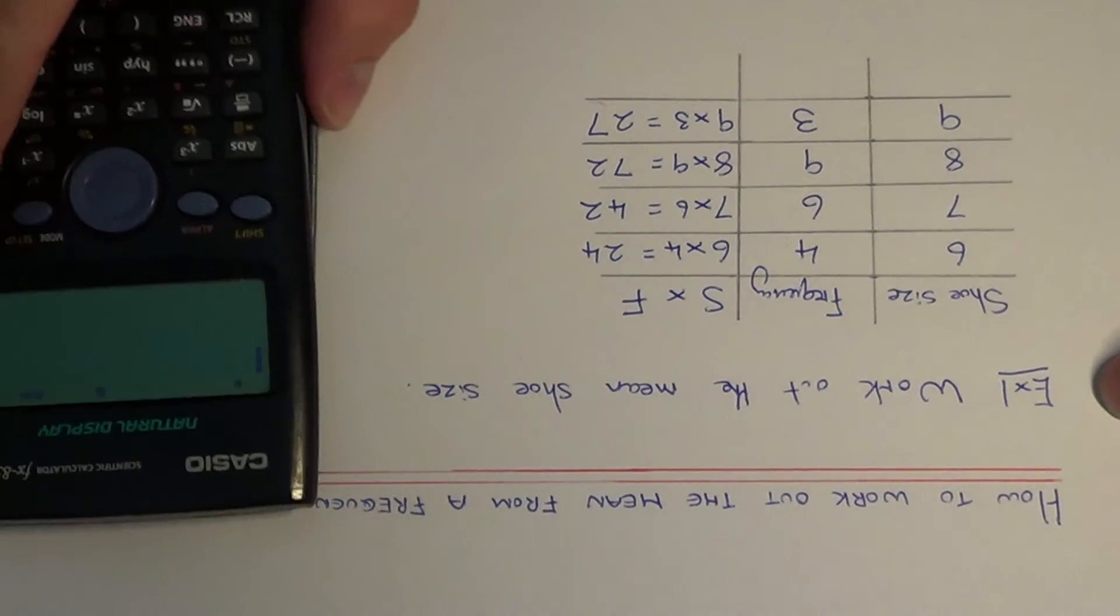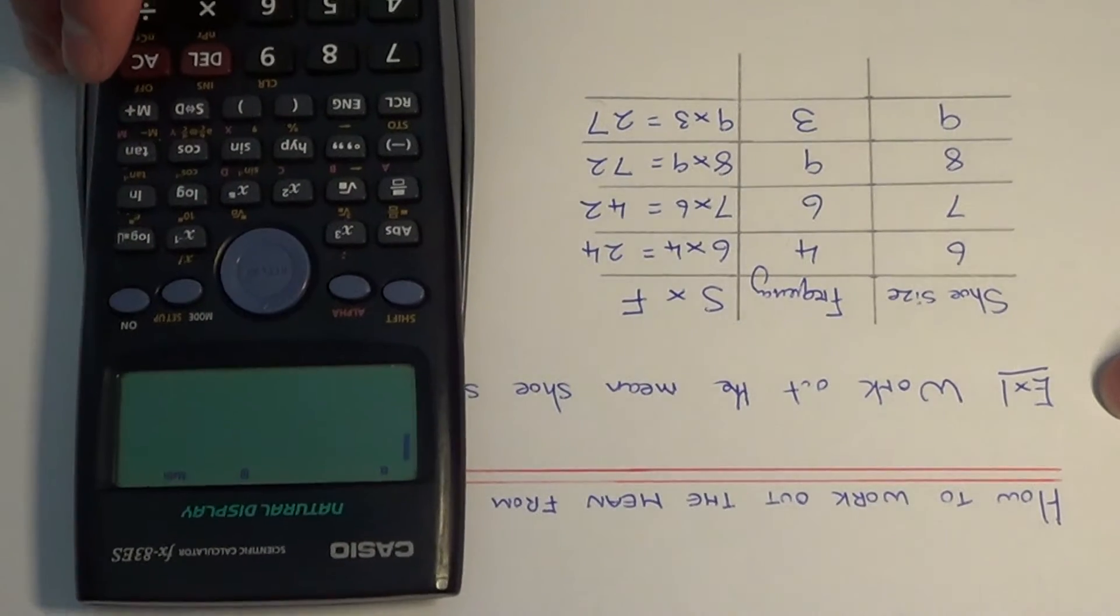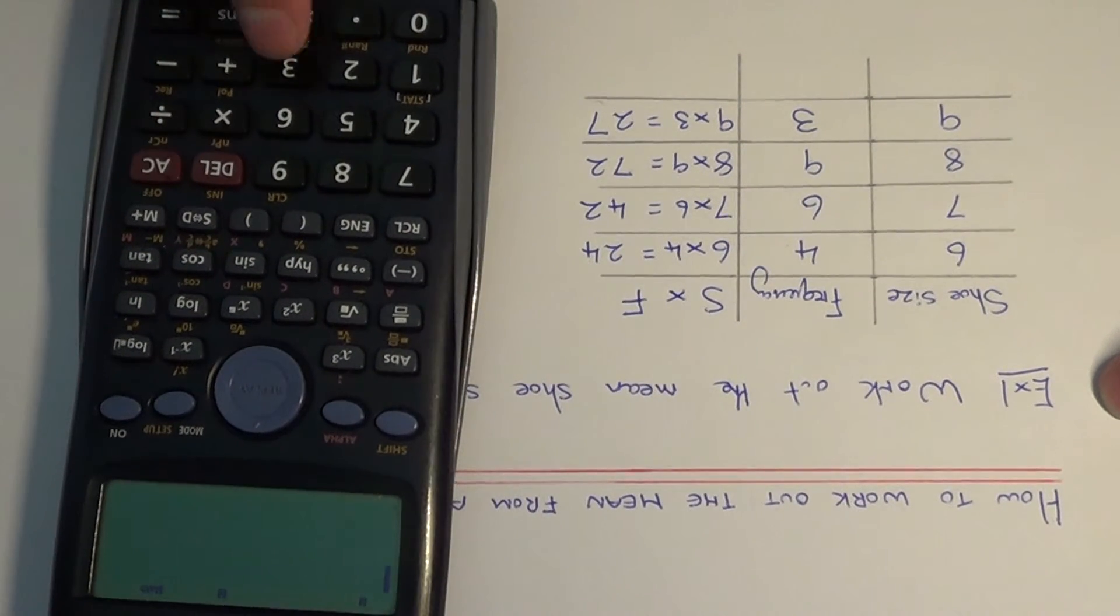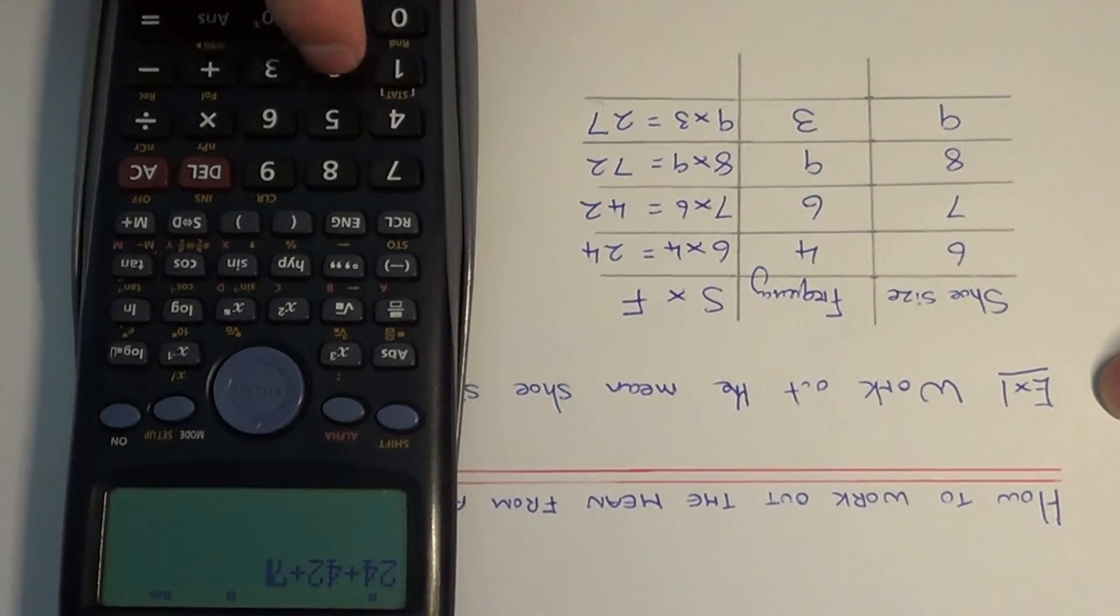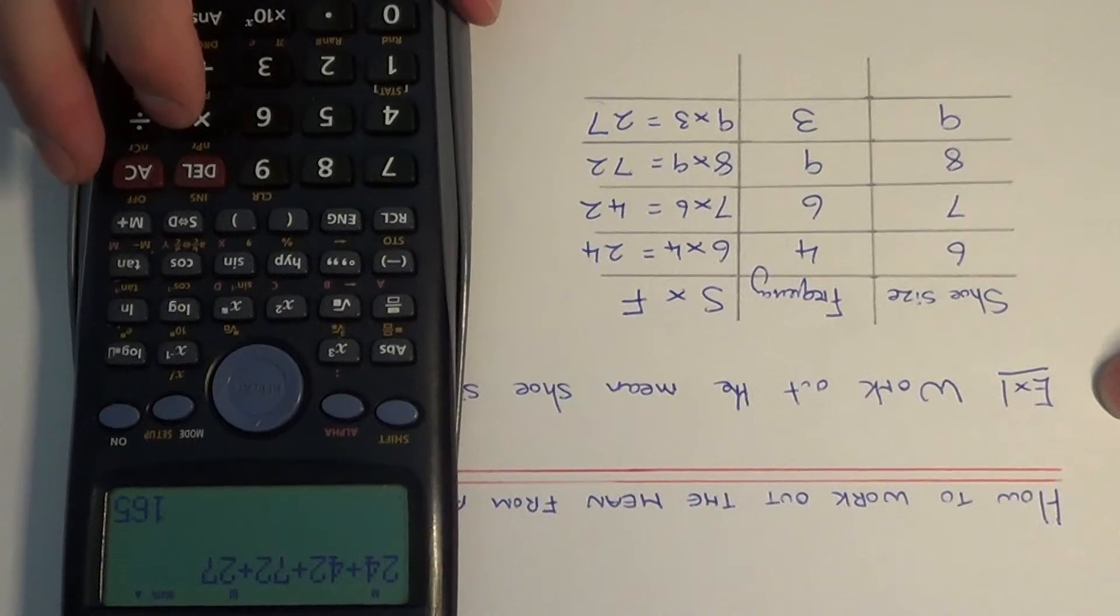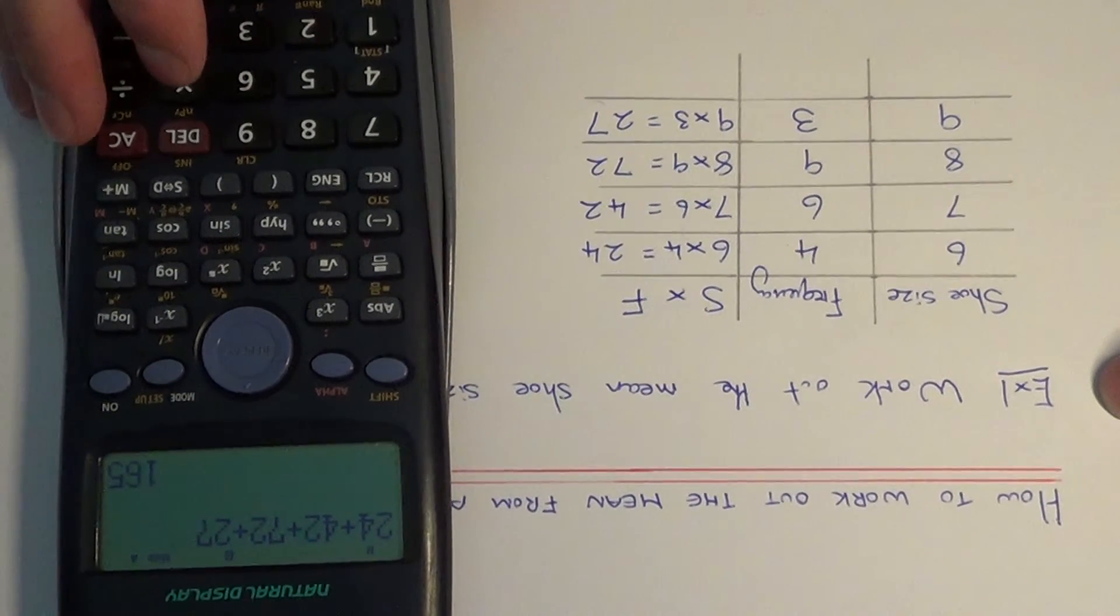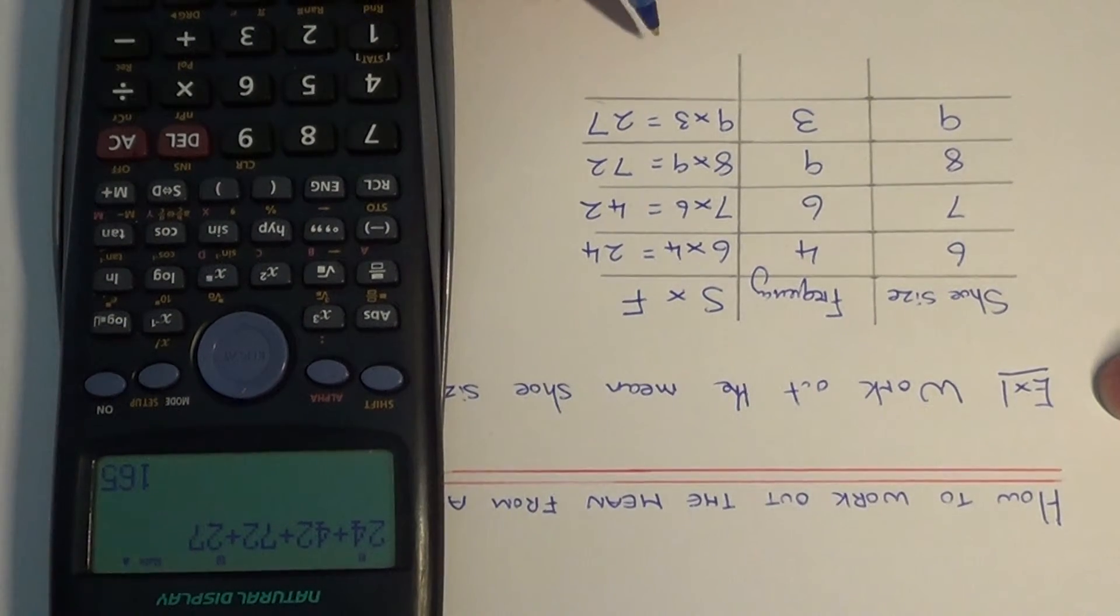So if we add up this new column to give us the total shoe size, we've got 24 add 42 add 72 add 27. So the total of all the people's shoe sizes is 165.